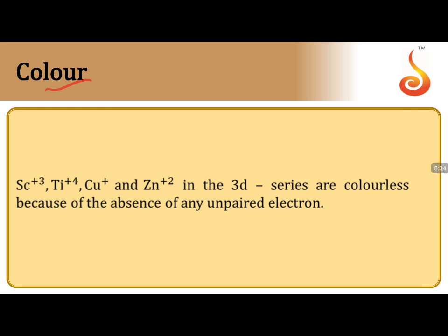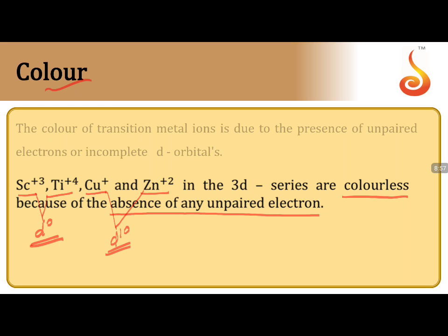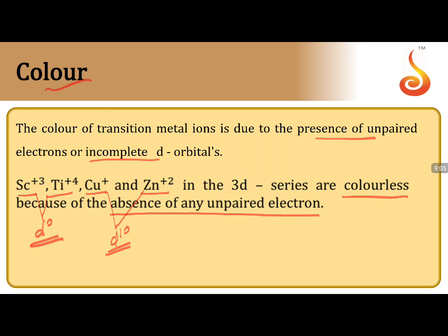Color exhibiting property: the presence of unpaired electrons is essential. If there are no unpaired electrons, the species is colorless. Sc³⁺ and Ti⁴⁺ have d⁰ configuration; Cu⁺ and Zn²⁺ have d¹⁰ configuration — all colorless. All other 3d transition metal ions exhibit color due to d-d transitions. When d-orbital degeneracy is split, transitions between t₂g and eg levels in the visible region produce color.